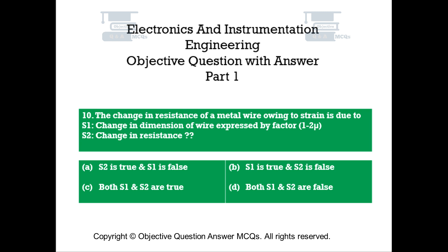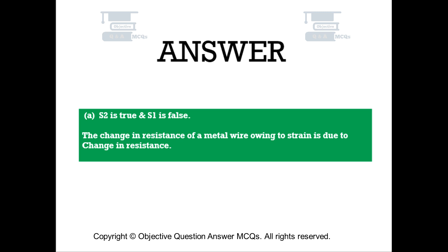Question number 10. The change in resistance of a metal wire owing to strain is due to: S1 — Change in dimension of wire expressed by factor 1 minus 2 nu. S2 — Change in resistance. Option A: S2 is true and S1 is false. Option B: S1 is true and S2 is false. Option C: Both S1 and S2 are true. Option D: Both S1 and S2 are false. The right answer is Option A — S2 is true and S1 is false. The change in resistance of a metal wire owing to strain is due to change in resistance.